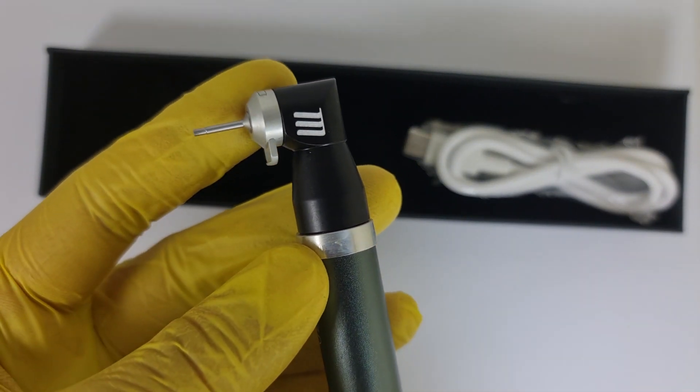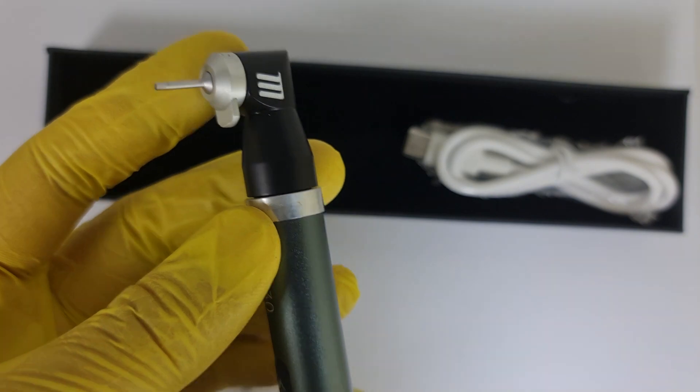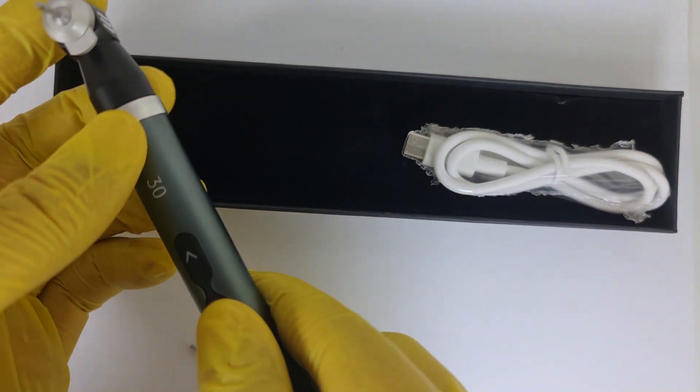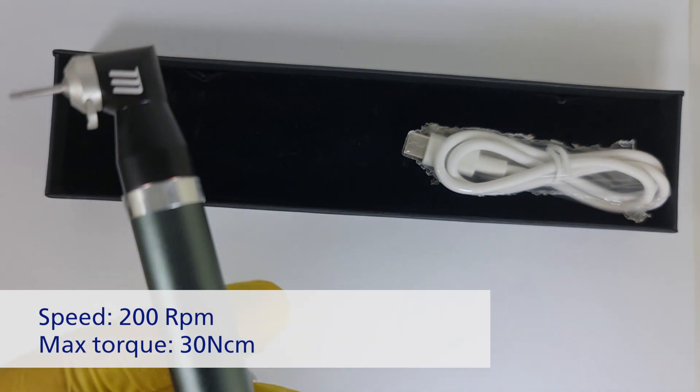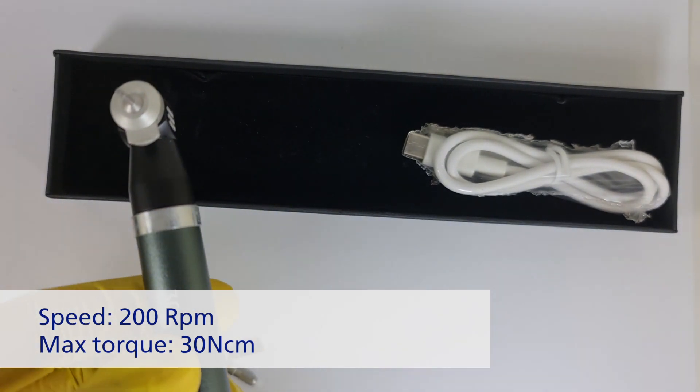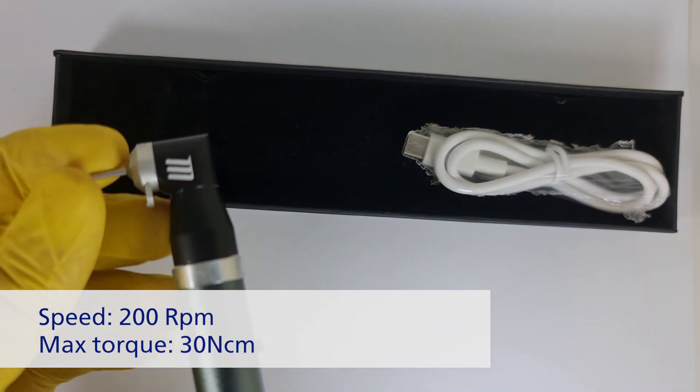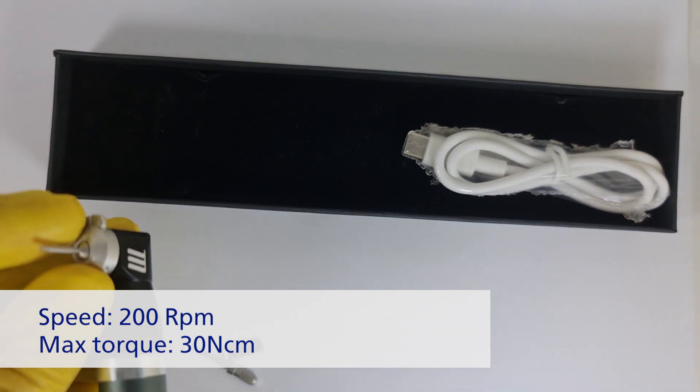There is a bidirectional motor, so with one button you tighten the screw and with the second one you're releasing the screw. Maximum speed is 200 rotations per minute and the torque is limited to 30 newton centimeters.